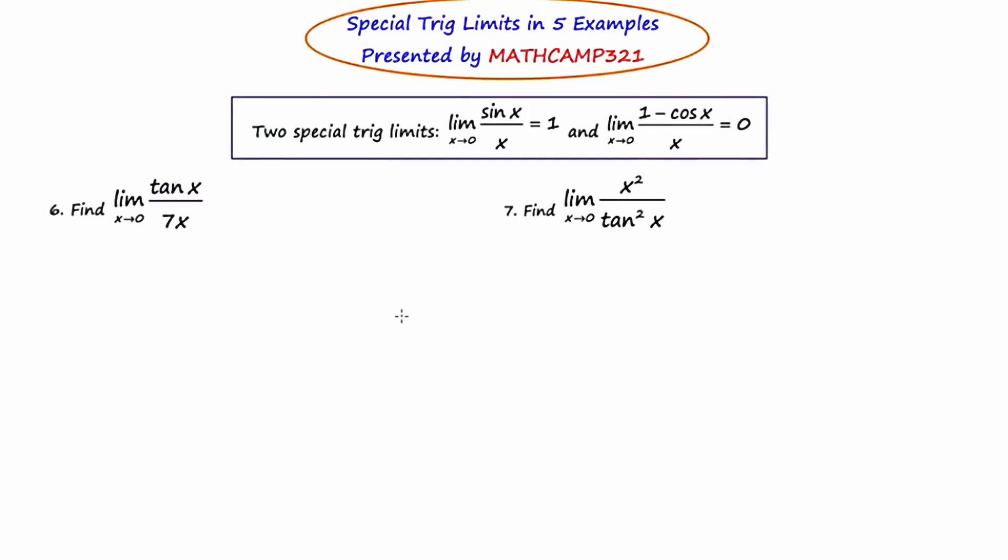Number six asks us to find the limit as x approaches zero of tan x over 7x. If we start by just doing a quick analysis of direct substitution, we'll see that we're going to end up getting zero over zero, which means we need to try something else.